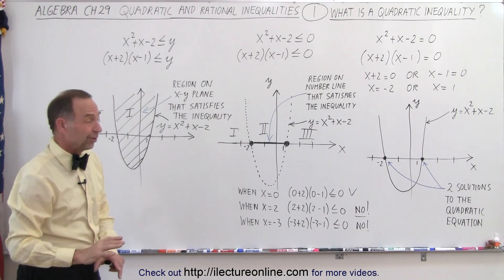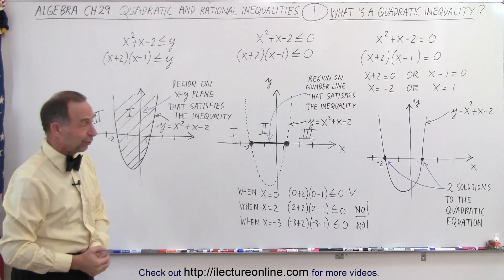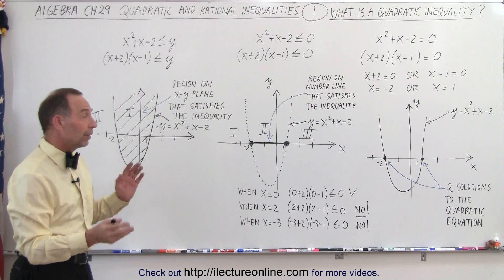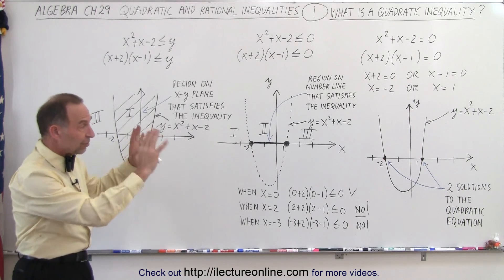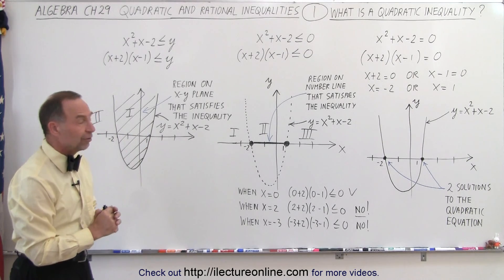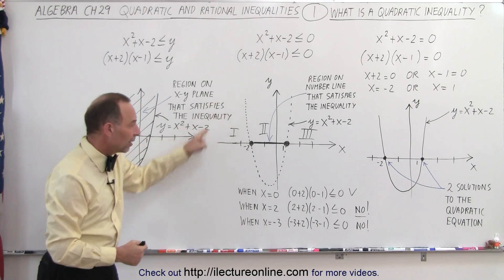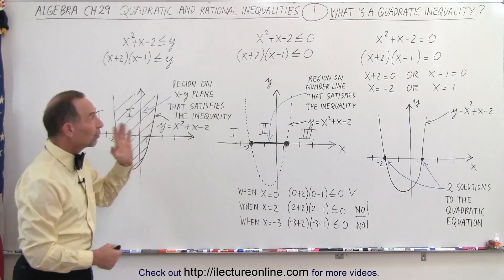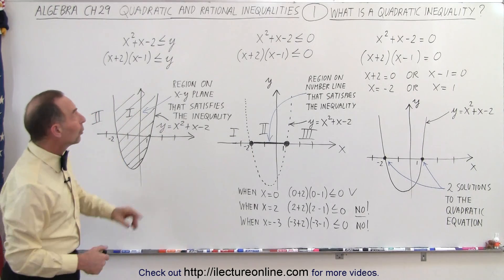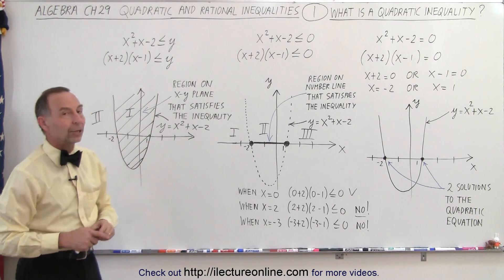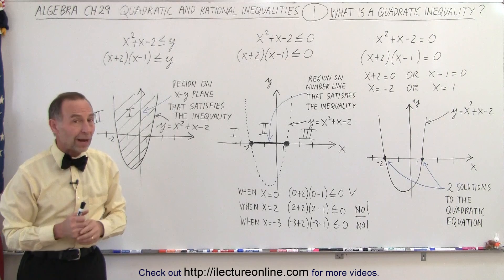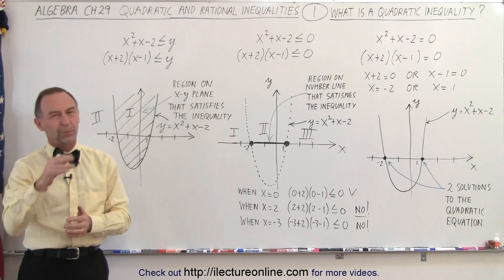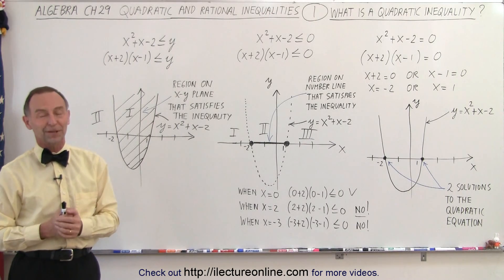So to summarize: a quadratic inequality is simply a quadratic equation where the equal sign is replaced by a less than, greater than, less than or equal to, or greater than or equal to symbol. The equation then turns into an inequality, and we're looking for a region on the number line rather than specific points representing the solution. We'll be concentrating on quadratic inequalities first, then moving on to rational inequalities — where rational refers to something in the form of a fraction.